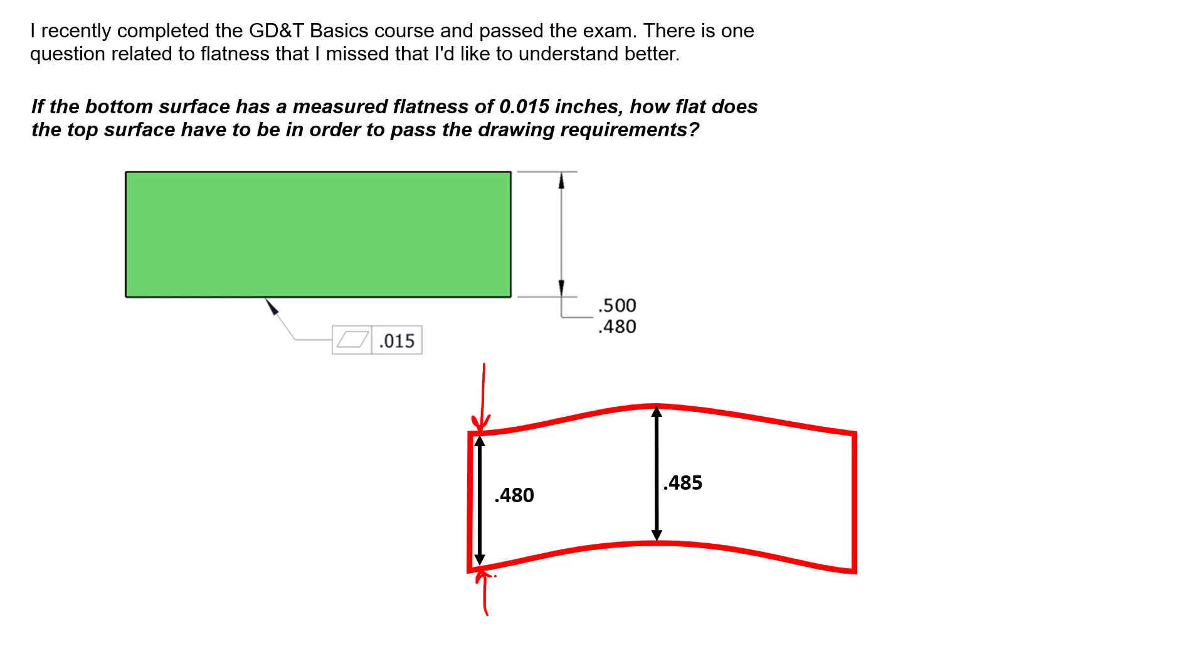That means if we were to take a caliper and measure from here to here, it has to be between 0.480 and 0.500. We also know, based on rule number one, that we have to be inside an envelope of perfect form at MMC, and our MMC for this feature of size is 0.500.